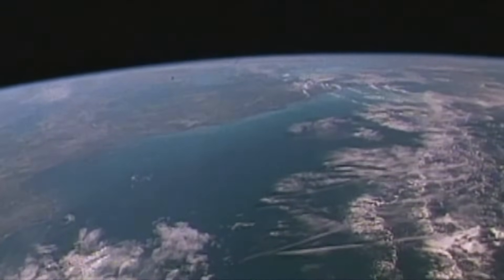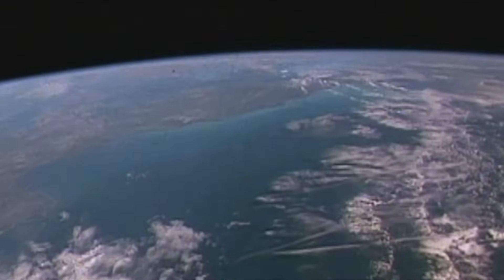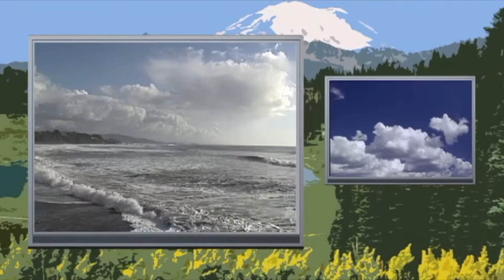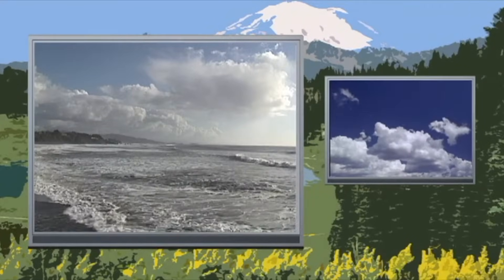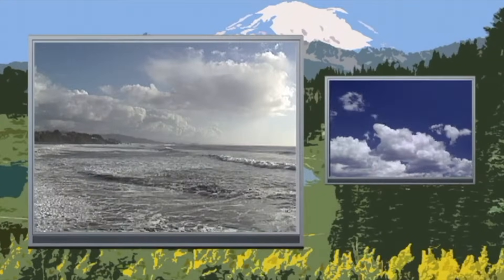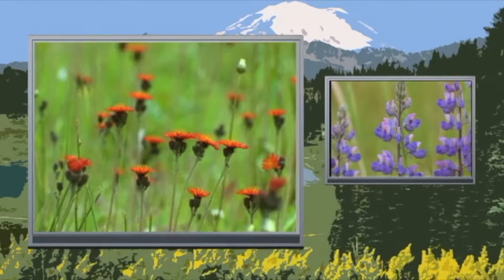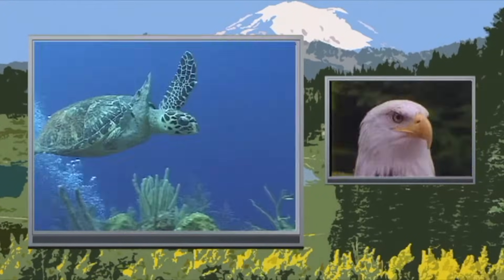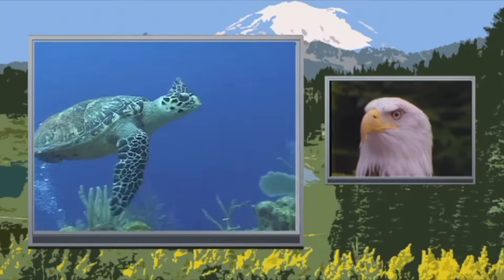Geographers are scientists who study the Earth, but they do more than look at rocks. Geographers study the Earth's surface, the atmosphere, and the oceans. Geographers also study plants, animals, and people all around our planet.